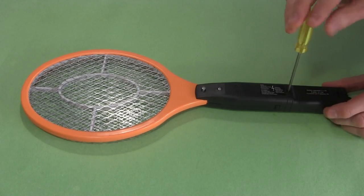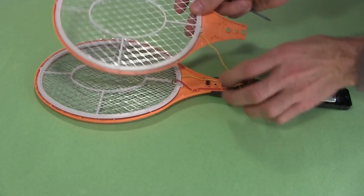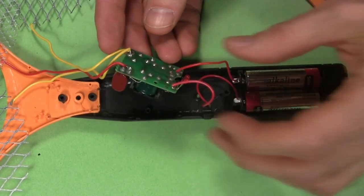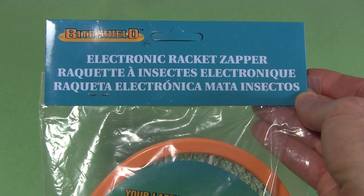Next I take the fly swatter apart. Here's the circuit board. Not all makes of fly swatters are the same as this, but for many the basic idea is the same. This is the packaging for mine.